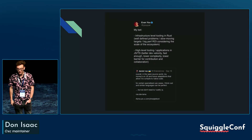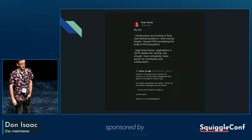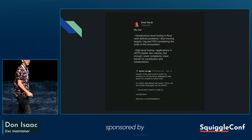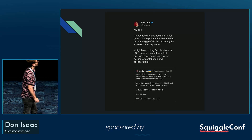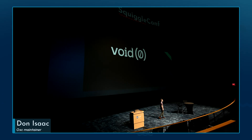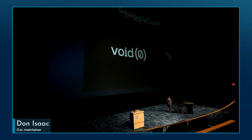Just recently, we announced that we're part of Void Zero. Void Zero is a company comprised of OXC, Rolldown, Vite, and Vitest. We're trying to put all of these tools together and integrate them very tightly.